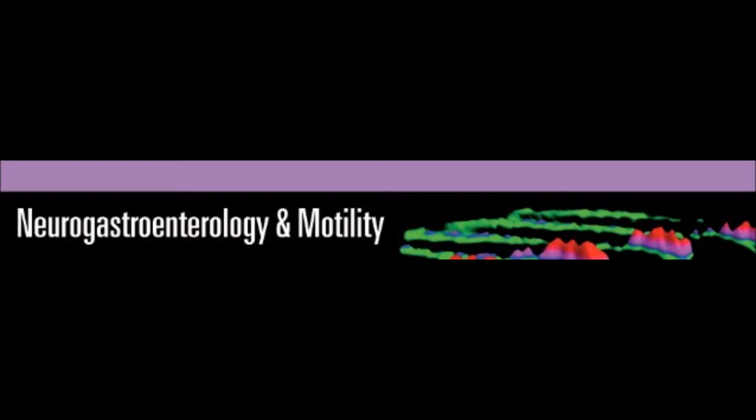Third, GPR55 also differs from the CB receptors with regard to signal transduction pathways. CB receptors usually couple to inhibitory G proteins — they reduce production of cyclic AMP, open potassium channels, hyperpolarize the cell, and lead to inhibitory action. While GPR55 couples to G alpha-12/13 and GQ proteins, activating downstream molecules like Rho-A and increasing calcium release. This indicates that GPR55 probably has a role in cell migration and cytoskeleton remodeling.